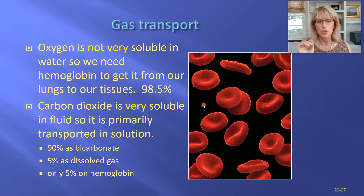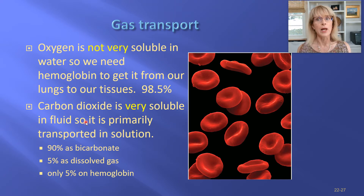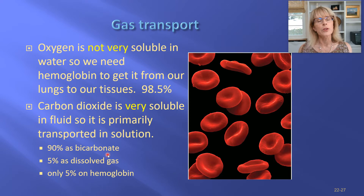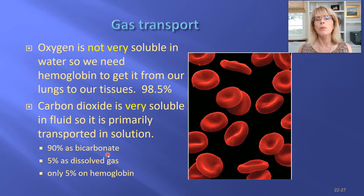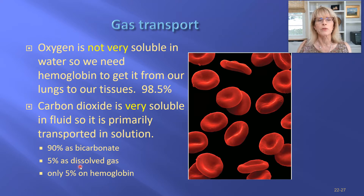It's very easy for your cells to measure CO2 because carbon dioxide is very soluble in water and is primarily transported in solution, found abundantly in the plasma of your blood. Ninety percent of it is in the form of bicarbonate. Carbon dioxide is not attached significantly to hemoglobin — that's not why hemoglobin evolved. Hemoglobin evolved to transport oxygen. Carbon dioxide transport is bicarbonate; it just doesn't need any help.